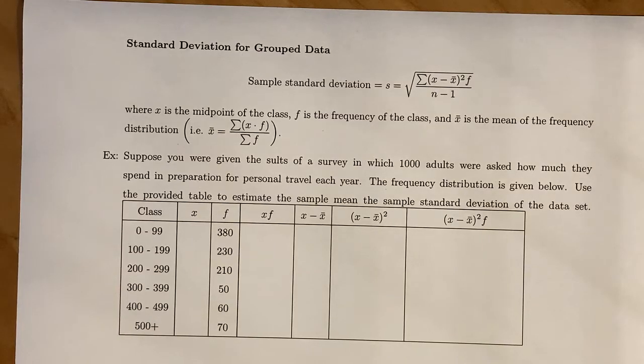The last topic in this section is figuring out standard deviation for grouped data. Sometimes you're going to be given data where instead of having honest-to-goodness data points, you're going to have classes. From the classes, we can approximate a mean, which means we can approximate some sort of standard deviation to that data set.